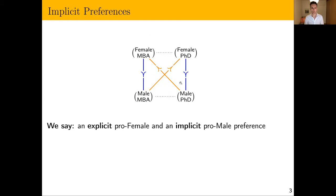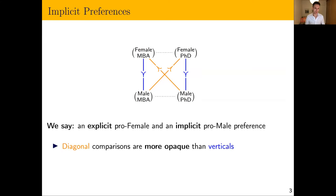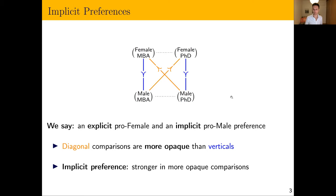We're going to say that this hiring manager is exhibiting two types of preferences: an explicit preference that's pro-female and an implicit preference that's pro-male. The terminology we're going to use is opacity — the diagonal comparisons are more opaque, they reveal less about preferences over gender than the vertical comparisons. An implicit preference is one that becomes stronger in more opaque comparisons.